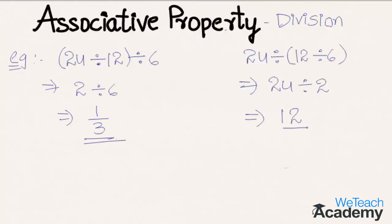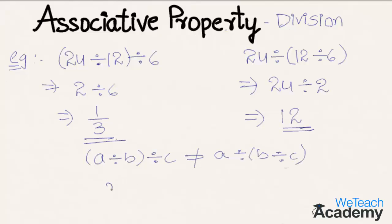Since both values are not equal, we can say that associative property does not hold for division. This can be represented as (a divided by b) divided by c is not equal to a divided by (b divided by c). Associative property is not a closed operation under division.